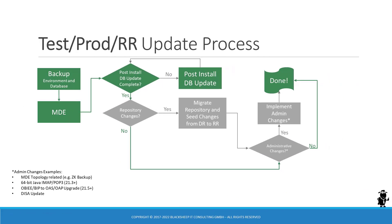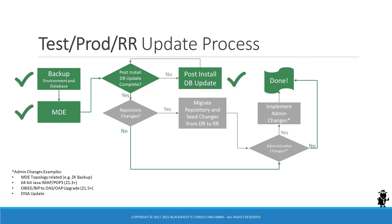The same is true for test or production, also known as RR environments, where the update process is a little shorter. The mandatory steps are the same: back up your environment, run MDE, run post-install database update. If there's nothing else to do, you're done. Of course, you have to repeat the update process on every Siebel instance. If the DR update included repository changes, you have to use the migration application to deploy the new and updated artifacts from the development environment to the runtime environment. You might also have some administrative changes on your checklist to execute before declaring the update complete.